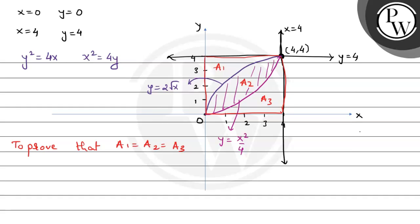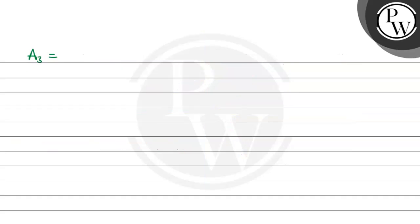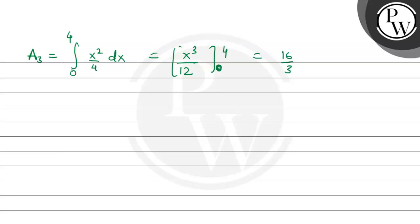So the value of A2 also comes out to 16/3. Now let's find A3. A3 is the region under the curve y equals x squared by 4. So A3 equals the integral from 0 to 4 of x squared by 4 dx. Integrating gives x cubed by 12, with limits 0 to 4. Applying the upper limit: 64 by 12, that is 16/3, minus the lower limit which is 0. So the value of A3 is also 16/3, and therefore A1 equals A2 equals A3.